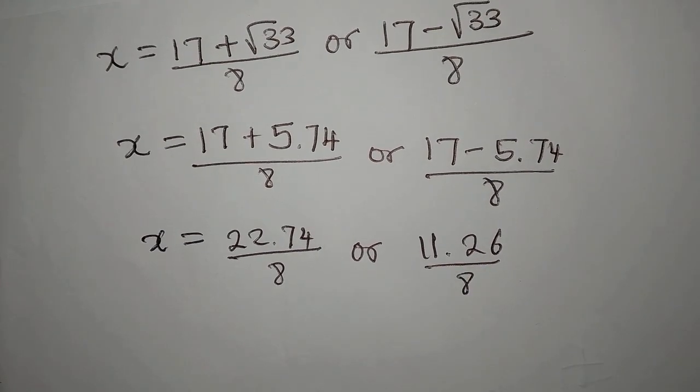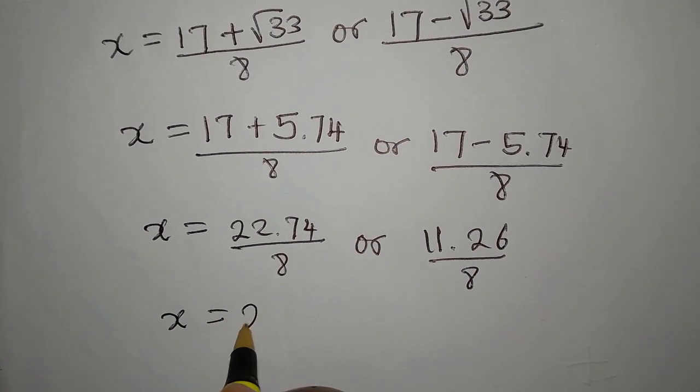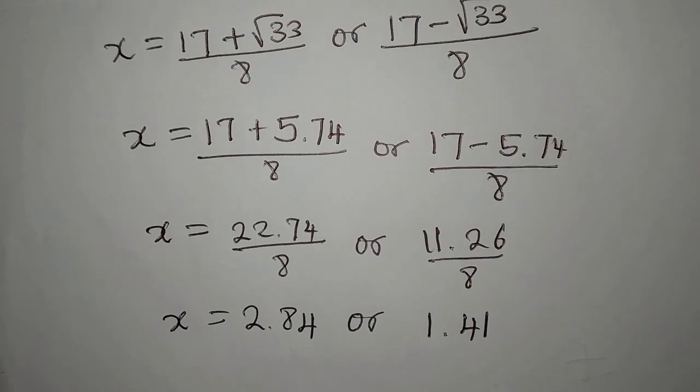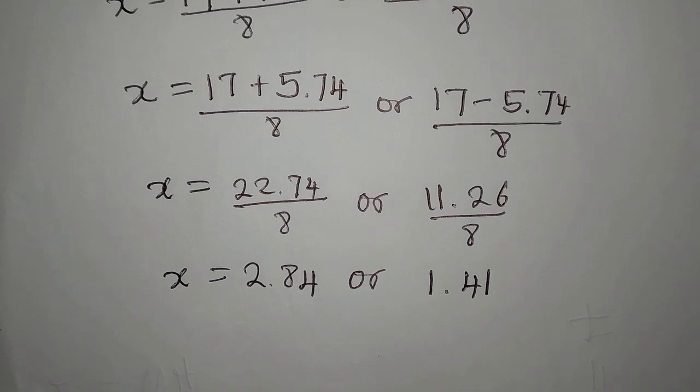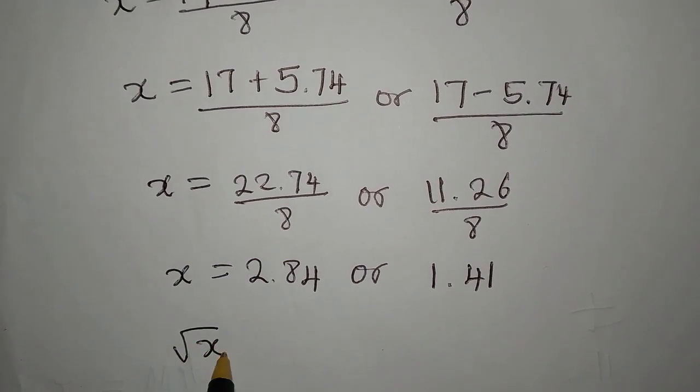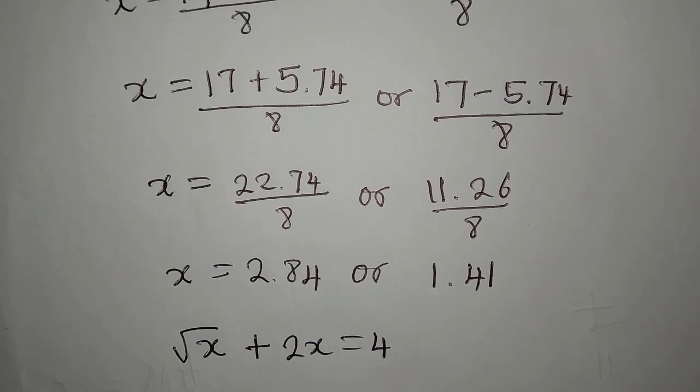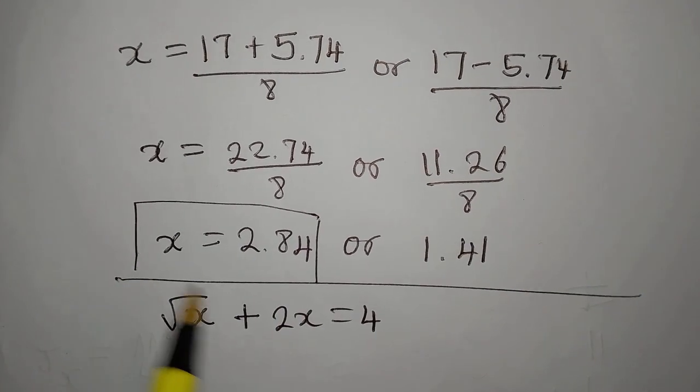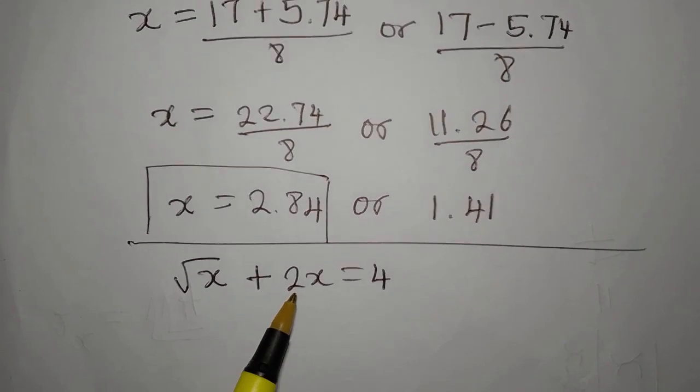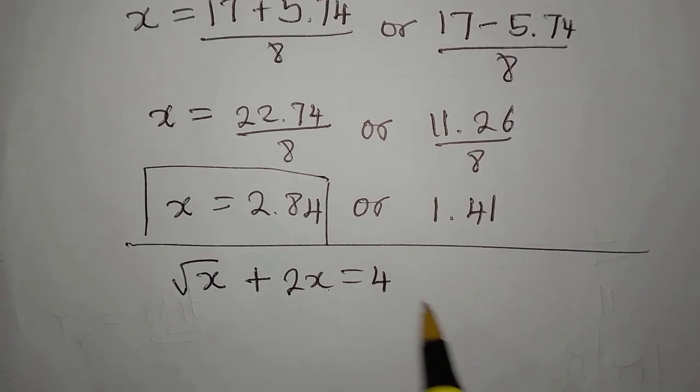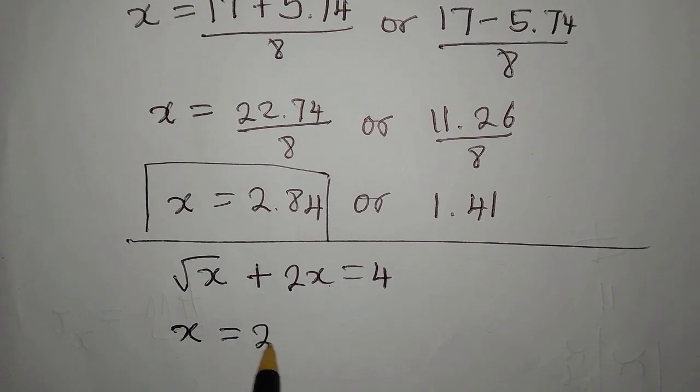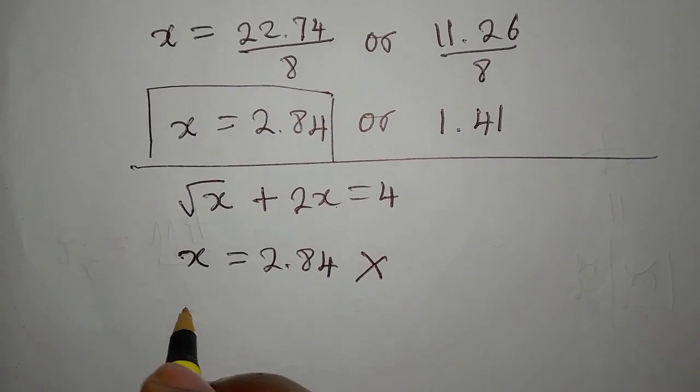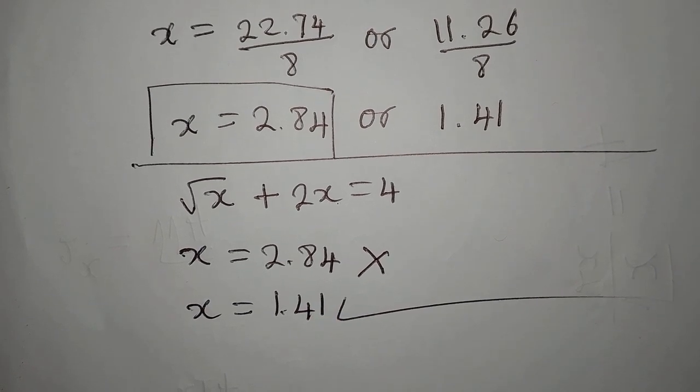Then if we go ahead, x will be 2.84 approximately, or 1.41 approximately. But it's obvious that both of them will not satisfy this equation. If you look at this very well, you discover that 2 times 2.84 is already more than 4, so x equals 2.84 has to be rejected. And then the other value, x equals 1.41 approximately, satisfies the given equation.